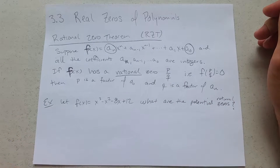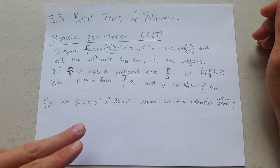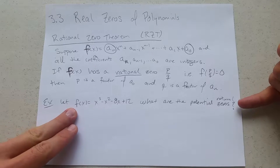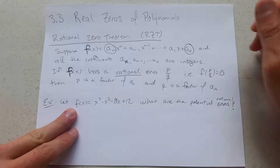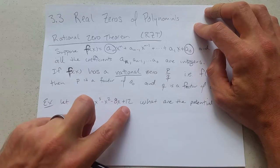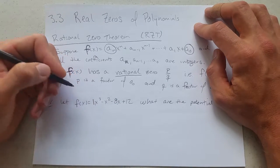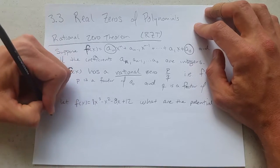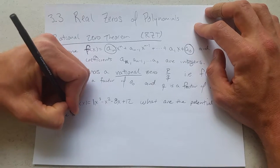So if there's a rational zero, we know what it's going to look like. Here we have a function. What are the potential rational zeros of this function? We're going to look at the coefficient of the leading term and the constant term, also known sometimes as the trailing term. We have 1 and we have 12.